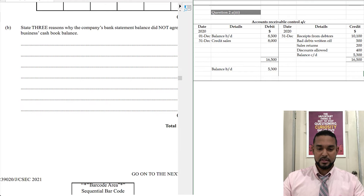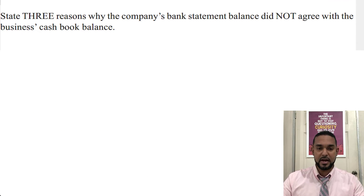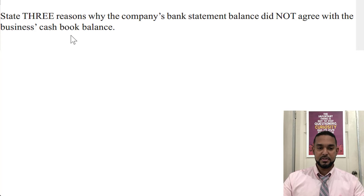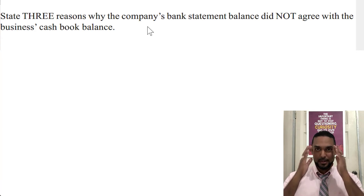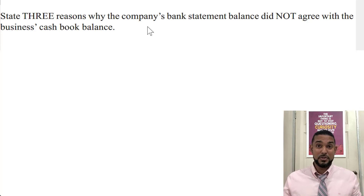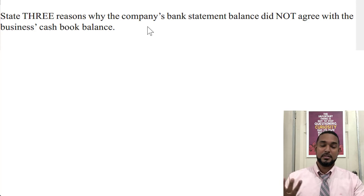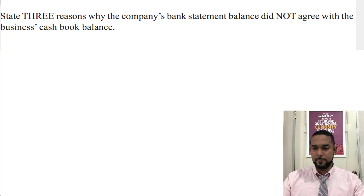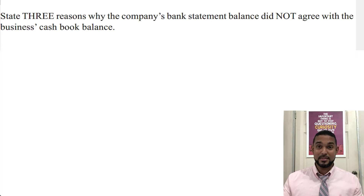The last part of the question asks us to state three reasons why the company's bank statement balance did not agree with the business's cash book balance. This doesn't seem related to the control accounts content before it, which is a structural criticism I have of the exam — it's hard to adequately test an entire syllabus in five questions.